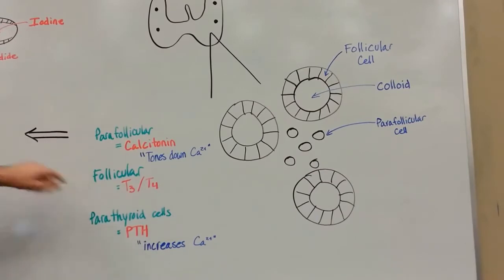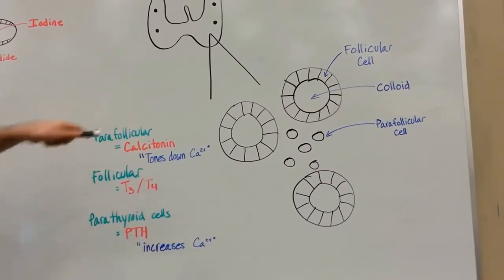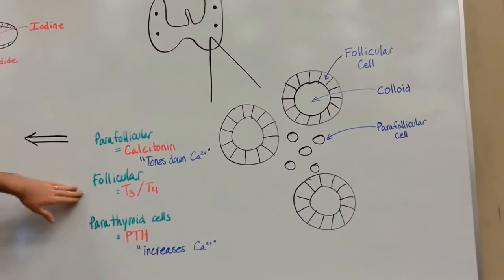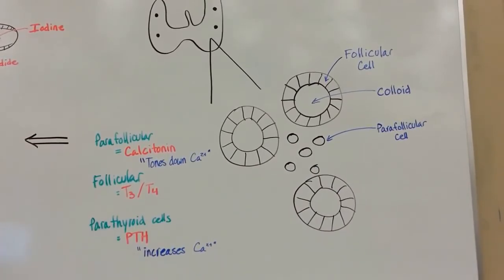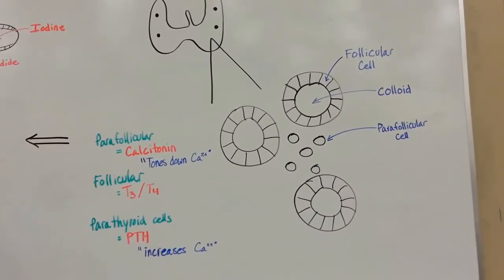Next, we've got the follicular cells, the ones that are surrounding the colloid. Those are going to be involved in synthesis and secretion of T3 and T4 hormone. And we'll go a little deeper into that.